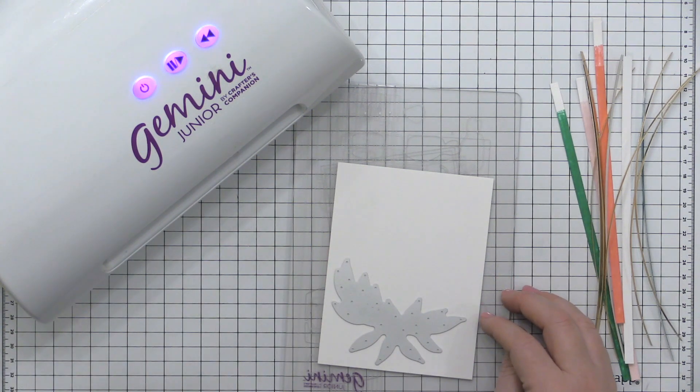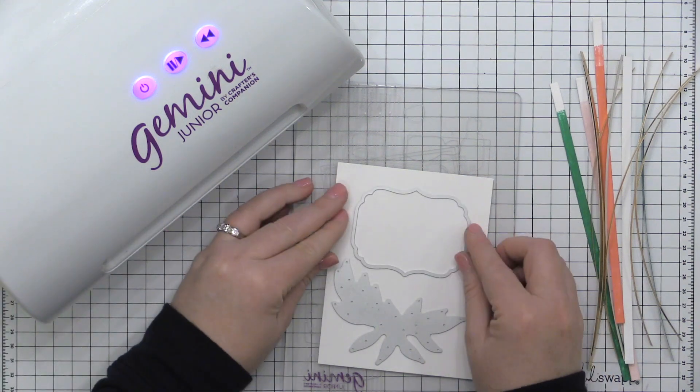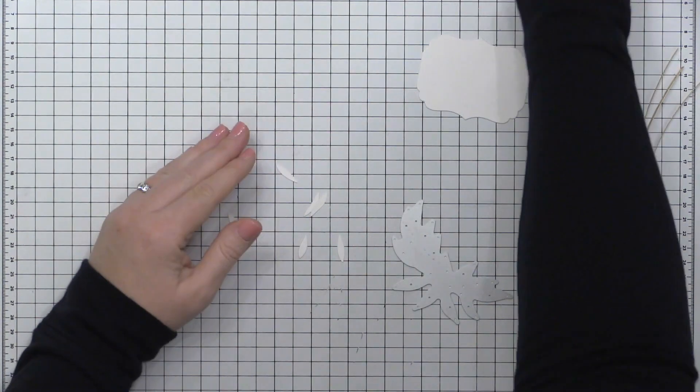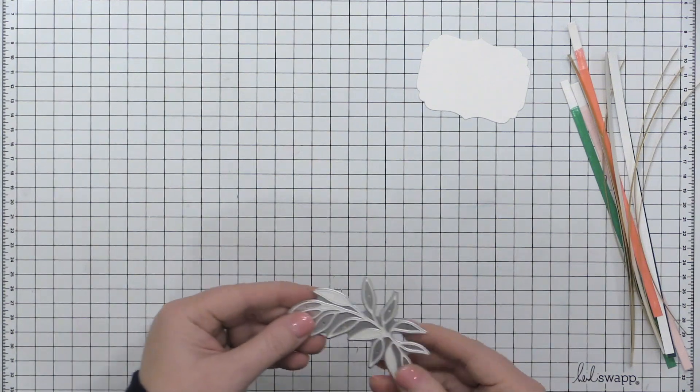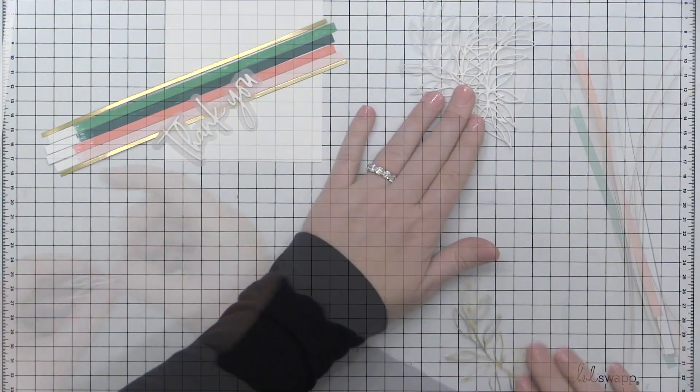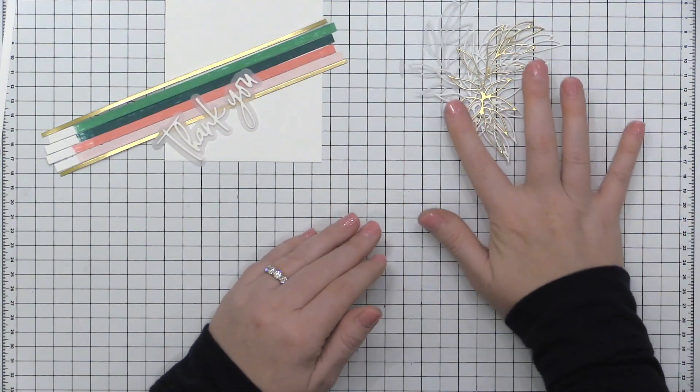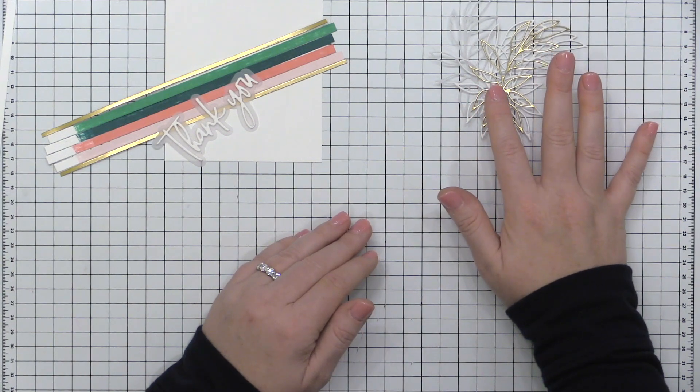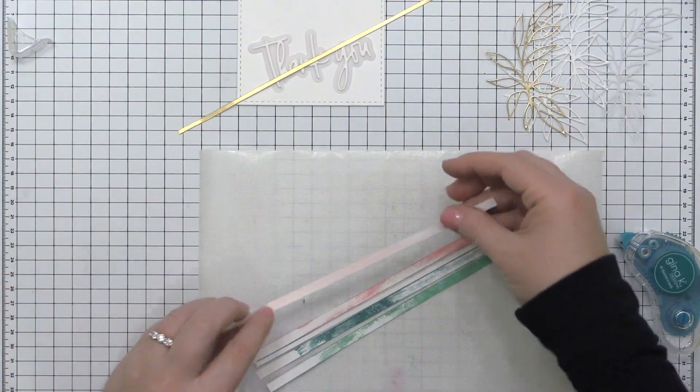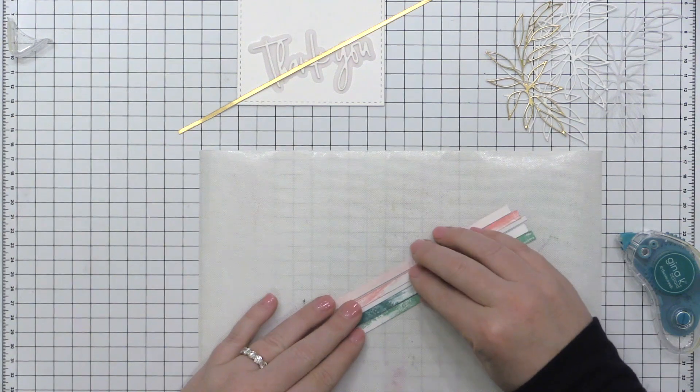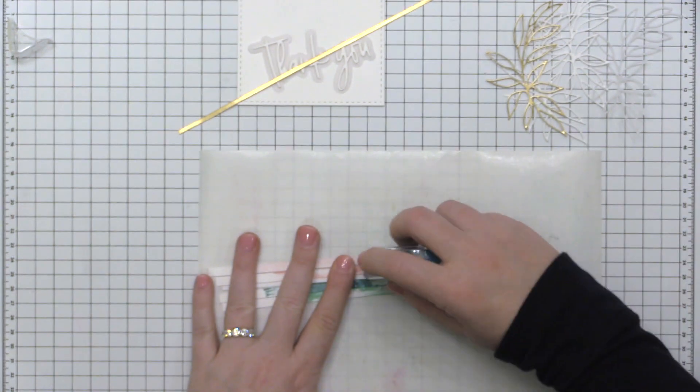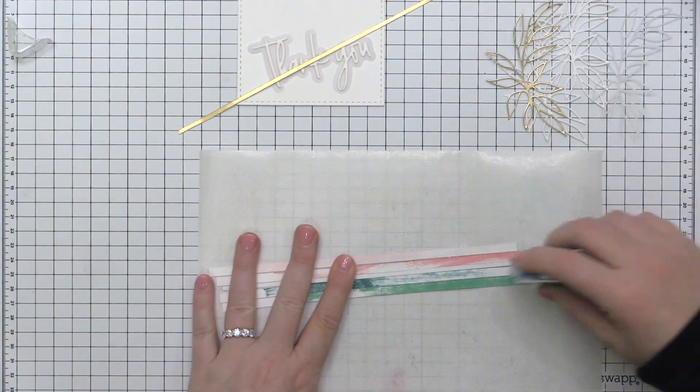Now while I have my die cut machine out I'm going to go ahead and use the leafy branch die and I also have this kind of label frame die from Pinkfresh Studio as well. I didn't end up using this on the final card project because it was taking away from the stripe design too much and you're watching me do the really lazy thing to get the die cut out of your die and that's just to slam it on your work surface. I actually do that quite often and my daughter walked in when I was doing it and she was like whoa what are you doing? I'm like I'm just being lazy. I said the die cut comes out perfectly when you do this and she's like oh yeah it did. So anyway if you want to be lazy like me you can just slam that die onto your work surface and the die cut pops right out.